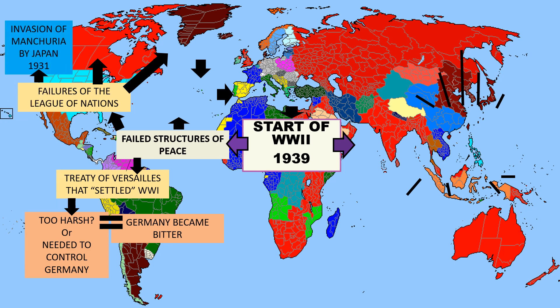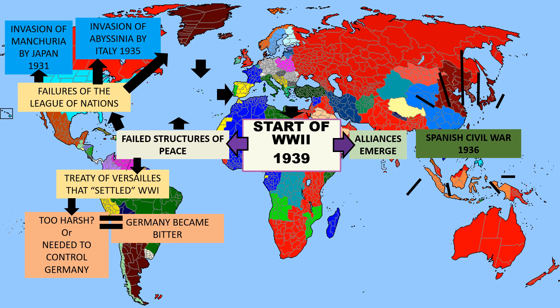In 1931, the invasion of Manchuria by Japan happened, followed by the invasion of Abyssinia by Italy in 1935. By 1935, an alliance system started to emerge. If you remember from our underlying causes of World War I, the alliance system that emerged prior to World War I was a contributing factor in the start of that war. Alliance systems emerged again after the invasion of Abyssinia by Italy in 1935, and this occurred during the Spanish Civil War in 1936.